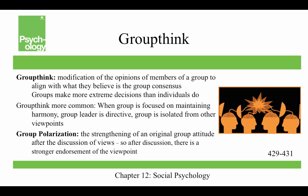Groupthink is the modification of the opinions of members of a group to align with what they believe is the group consensus, and groups make more extreme decisions than individuals do. Symptoms that make groupthink more common include when a group is focused on maintaining harmony, following a group leader's directive, or being isolated from other viewpoints. Believing the group is morally correct or invincible also increases groupthink — this happened with the fascist countries during World War II. Group polarization is the strengthening of an original group attitude after the discussion of views, leading to a stronger endorsement of the viewpoint.